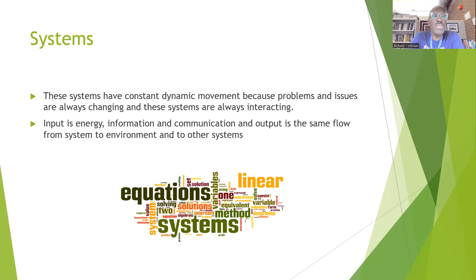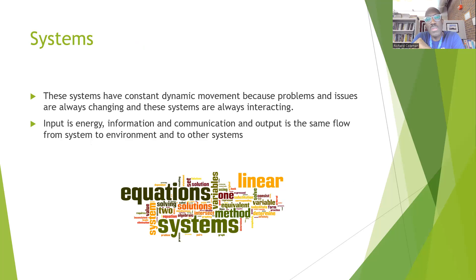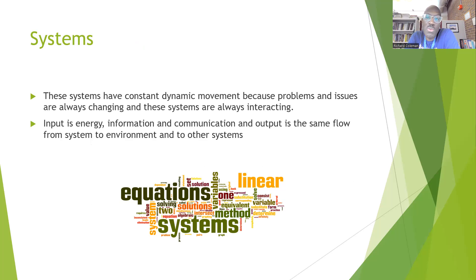These systems are in constant dynamic movement. There are things happening in a microsystem that may have an impact on something in the next level system up, which is the mesosystem, which may then have an impact on the system even further up, which is the macrosystem.